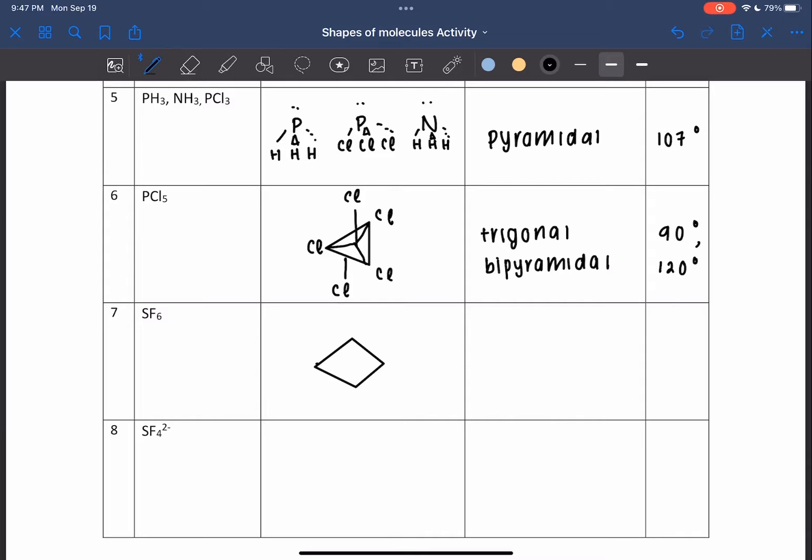For six bond pairs, it is called octahedral. An example for this is SF6, which has a bond angle of 90 degrees.